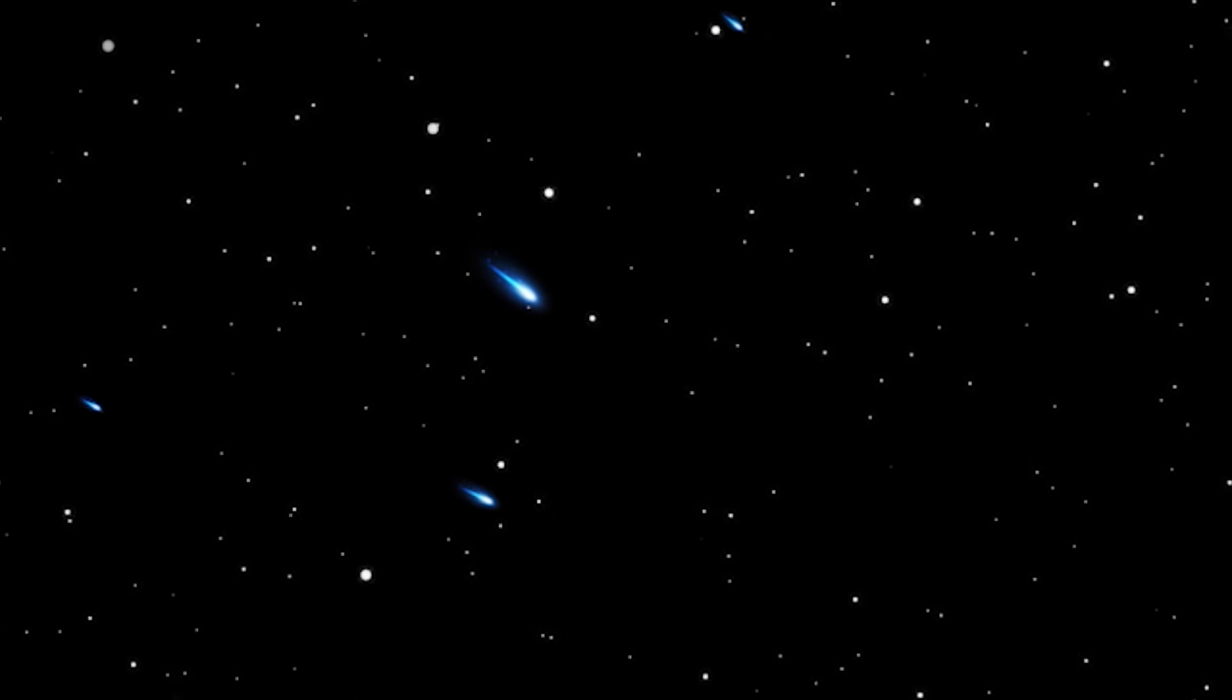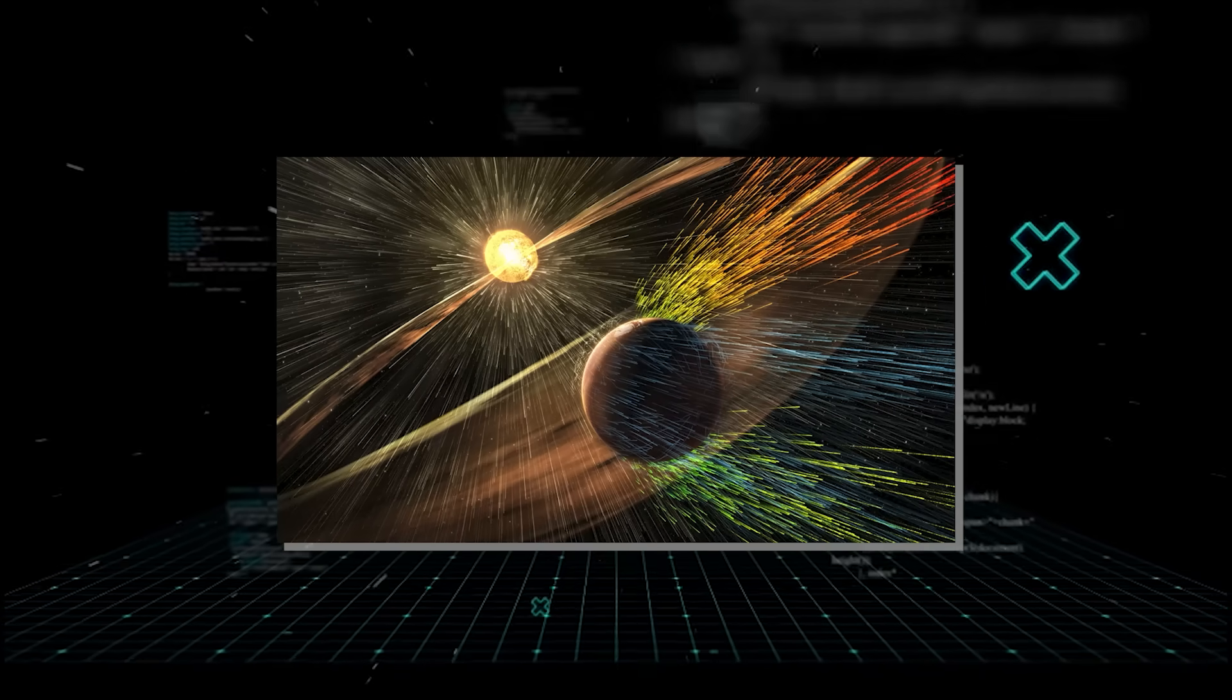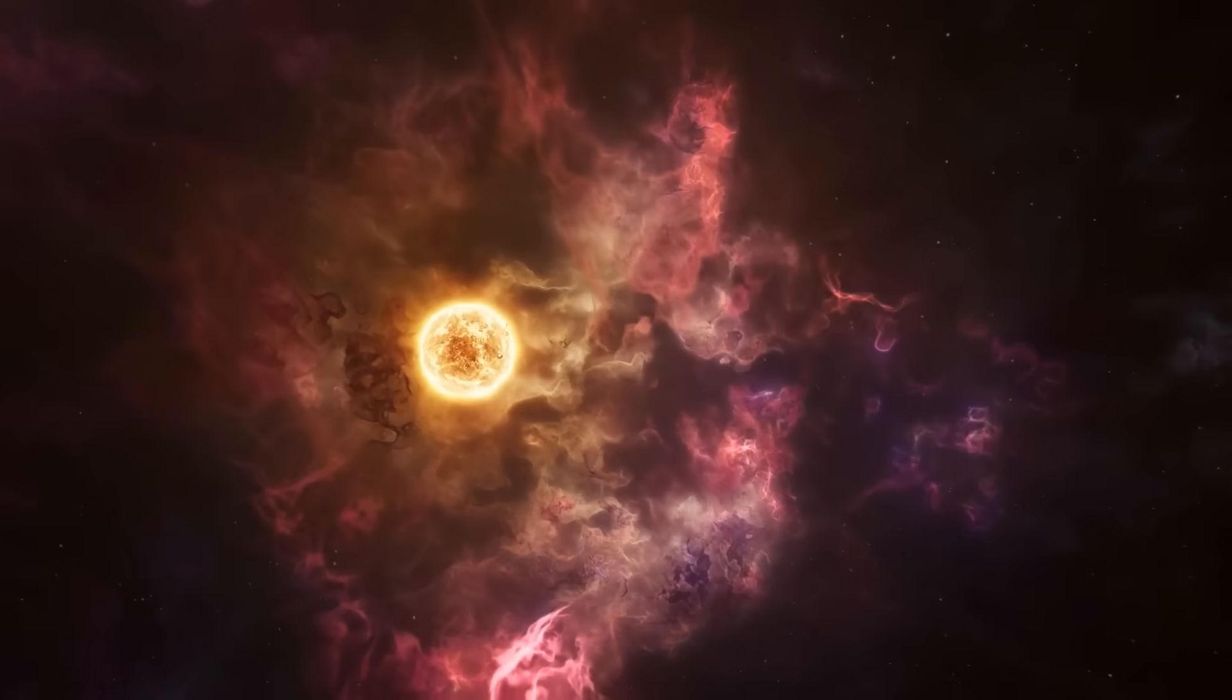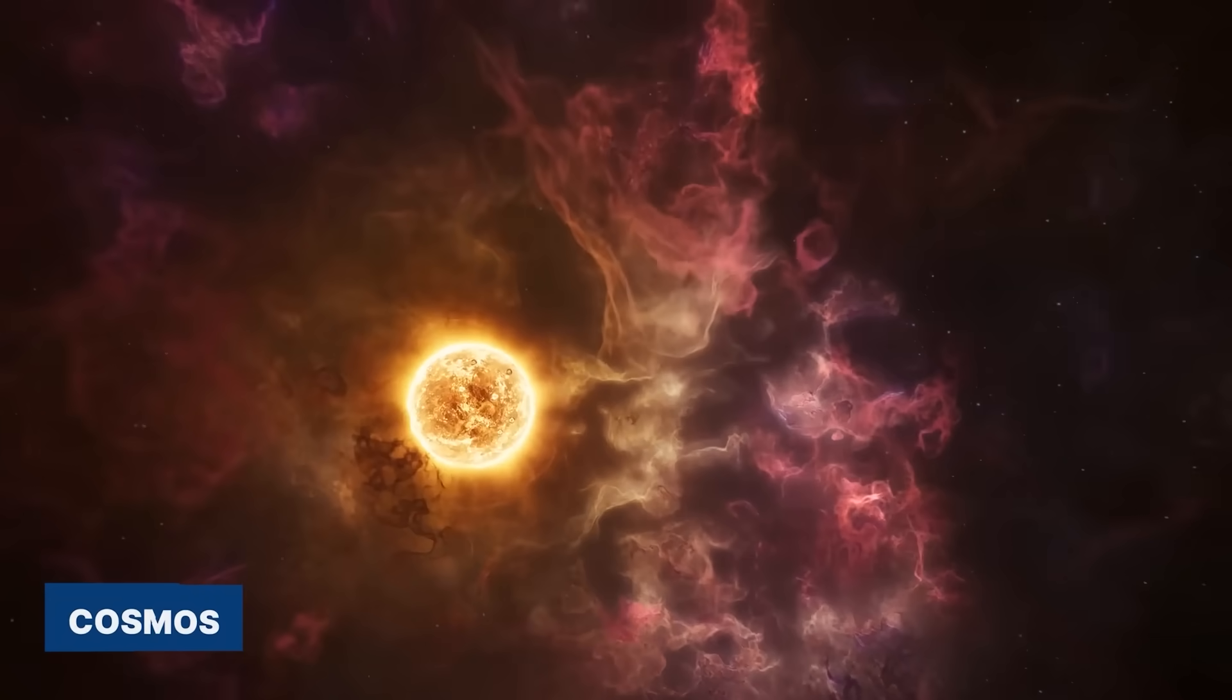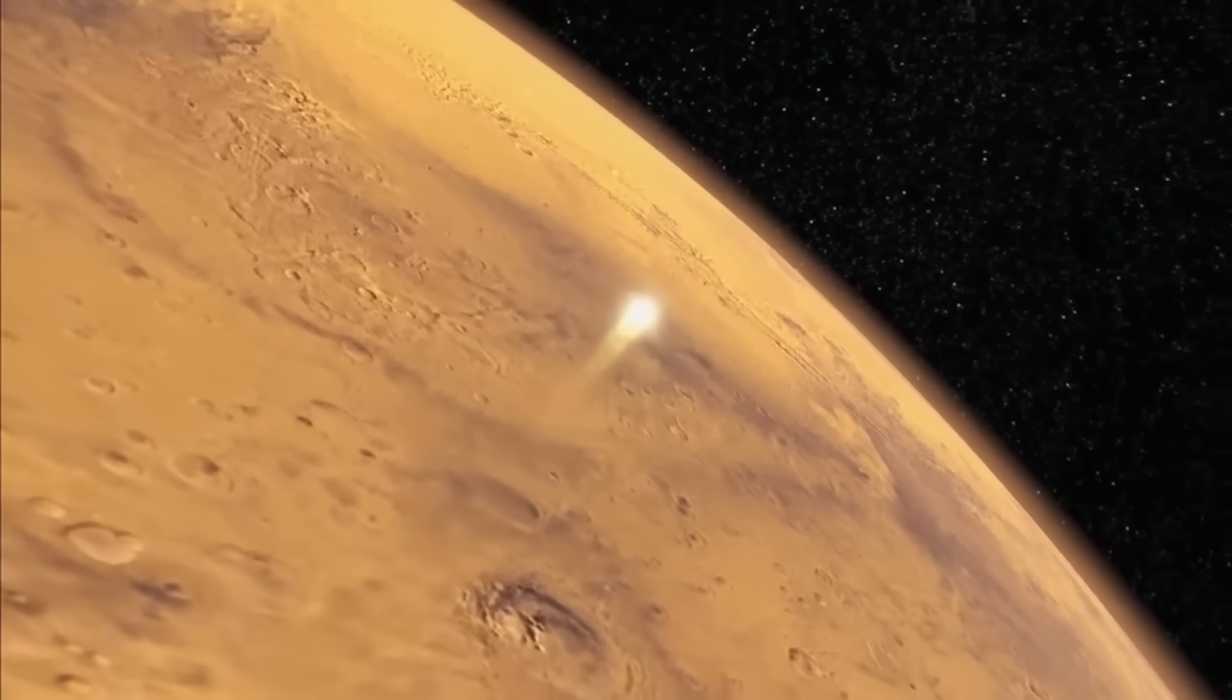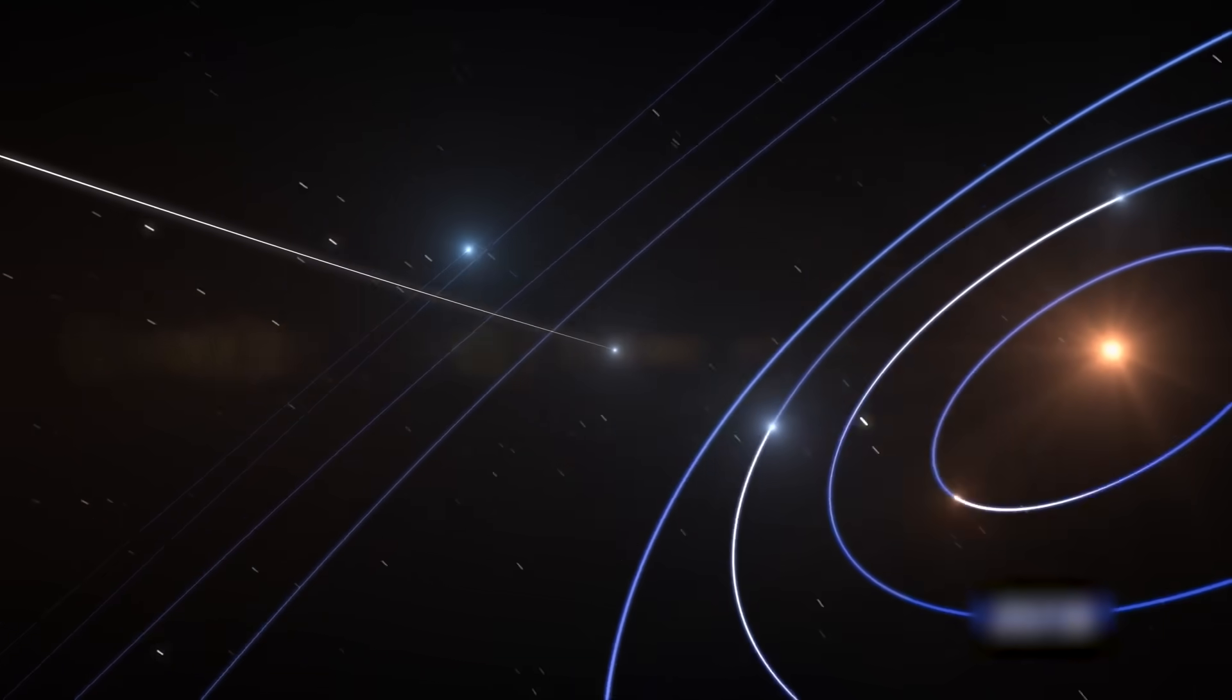Comets have tails. That's what they do. These tails, made of dust and gas, are supposed to stream away from the sun, pushed by the constant force of solar wind and radiation. It's one of the most basic rules of the cosmos. 3I Atlas breaks that rule. Every new image showed the same impossible sight. A bright, persistent plume of material pointing directly sunward. It was fighting against the very force that should have been pushing it away.